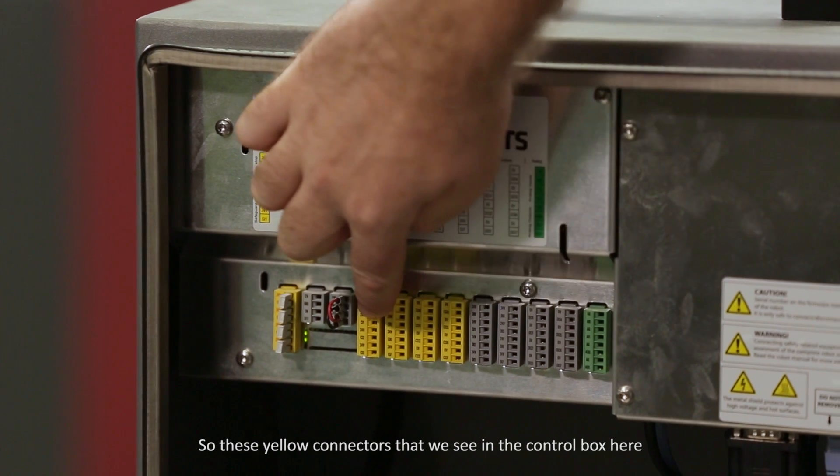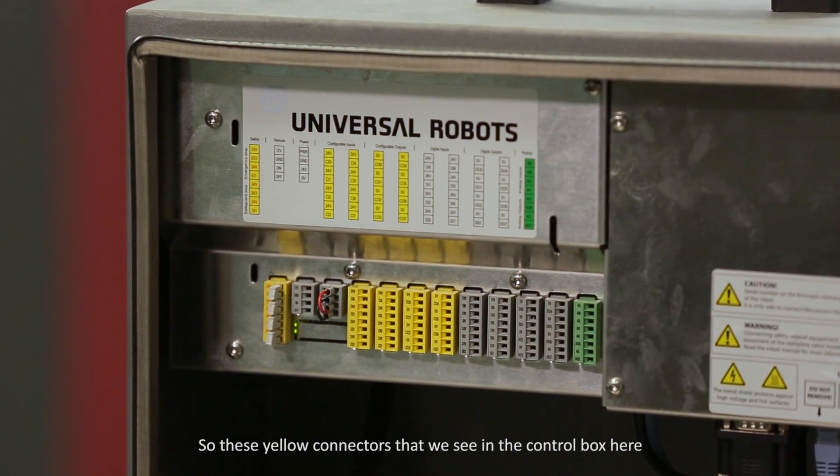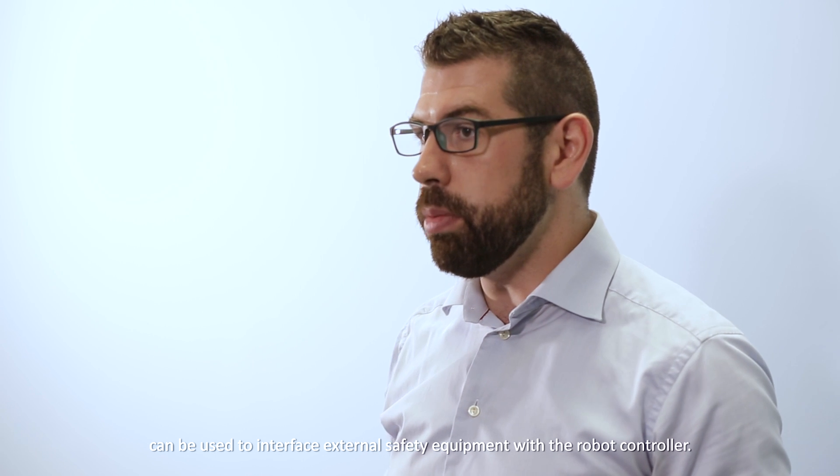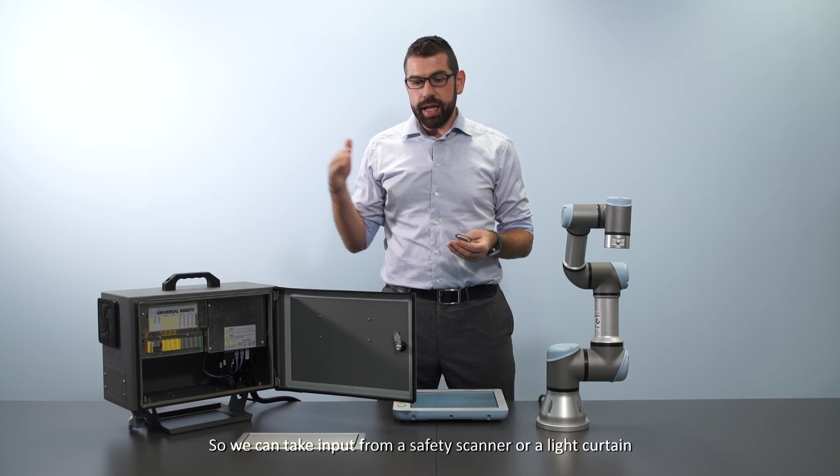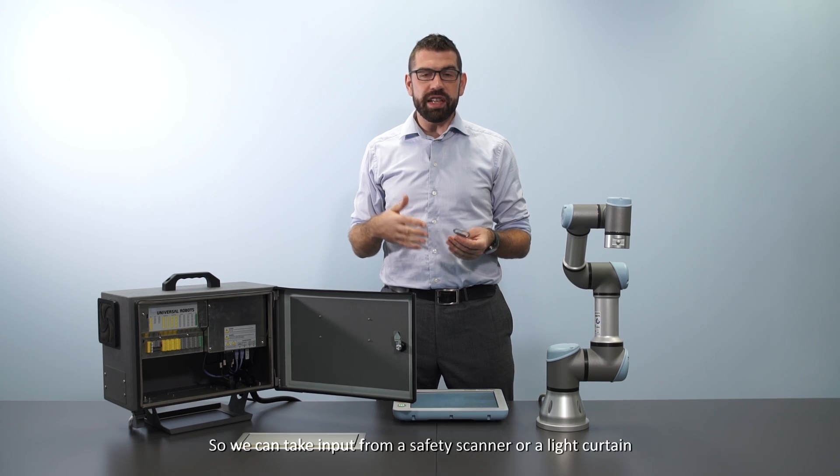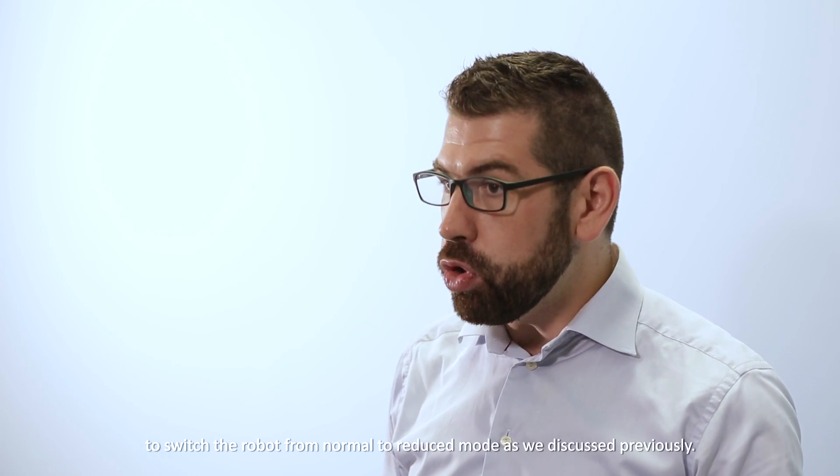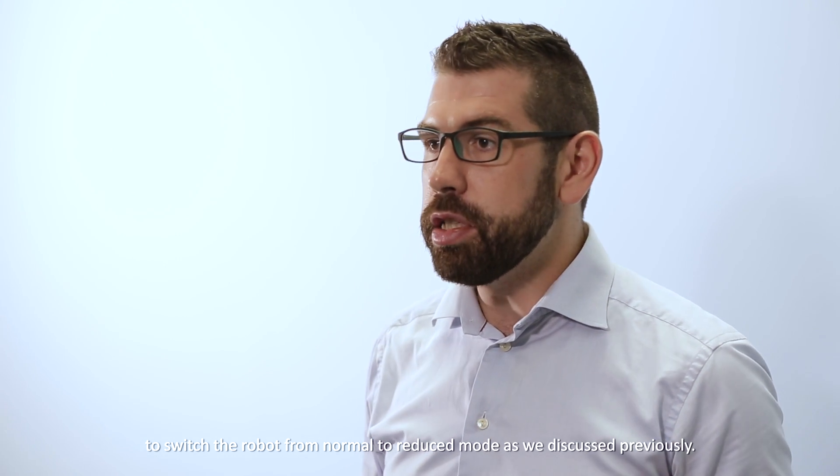These yellow connectors that we see in the control box here can be used to interface external safety equipment with the robot controller. We can take input from a safety scanner or a light curtain to switch the robot from normal to reduce mode as we discussed previously.